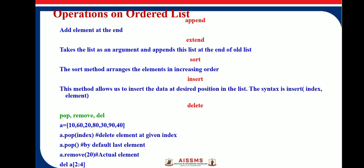The next function is sort. The sort method arranges elements in increasing order. One condition is that if the list consists of a similar type of data — either all integers or all characters — we can apply sort. If the list is a combination of integers and strings, we cannot apply the sort operation on such a list.